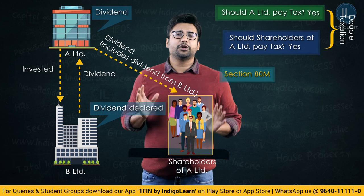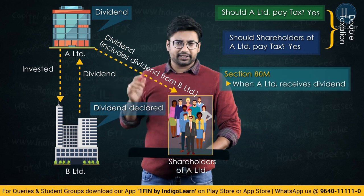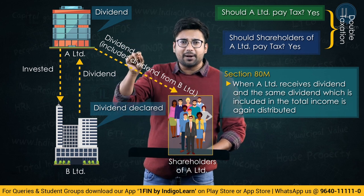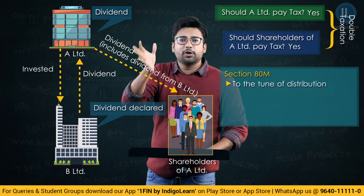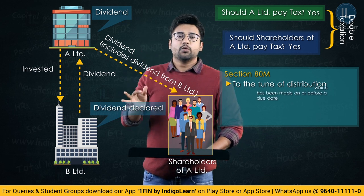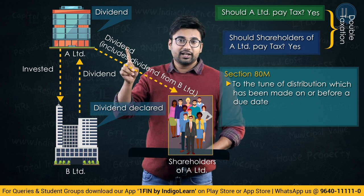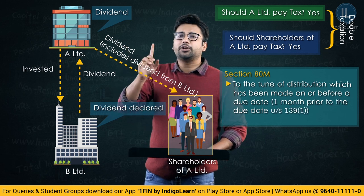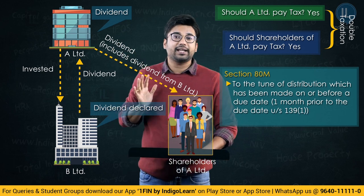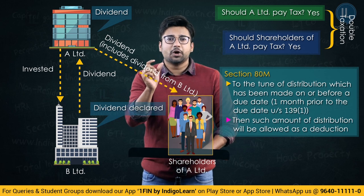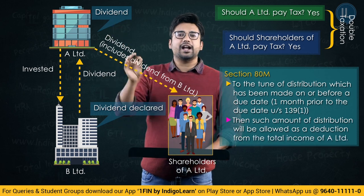Why is ATM introduced? What ATM very simply says is that when A Limited receives a dividend, and the same dividend which is included in the total income is again distributed by A Limited to its ultimate shareholders — to the tune of distribution which has been made on or before a due date — then so much of the amount distributed will be allowed as a deduction from the total income of A Limited under section ATM.